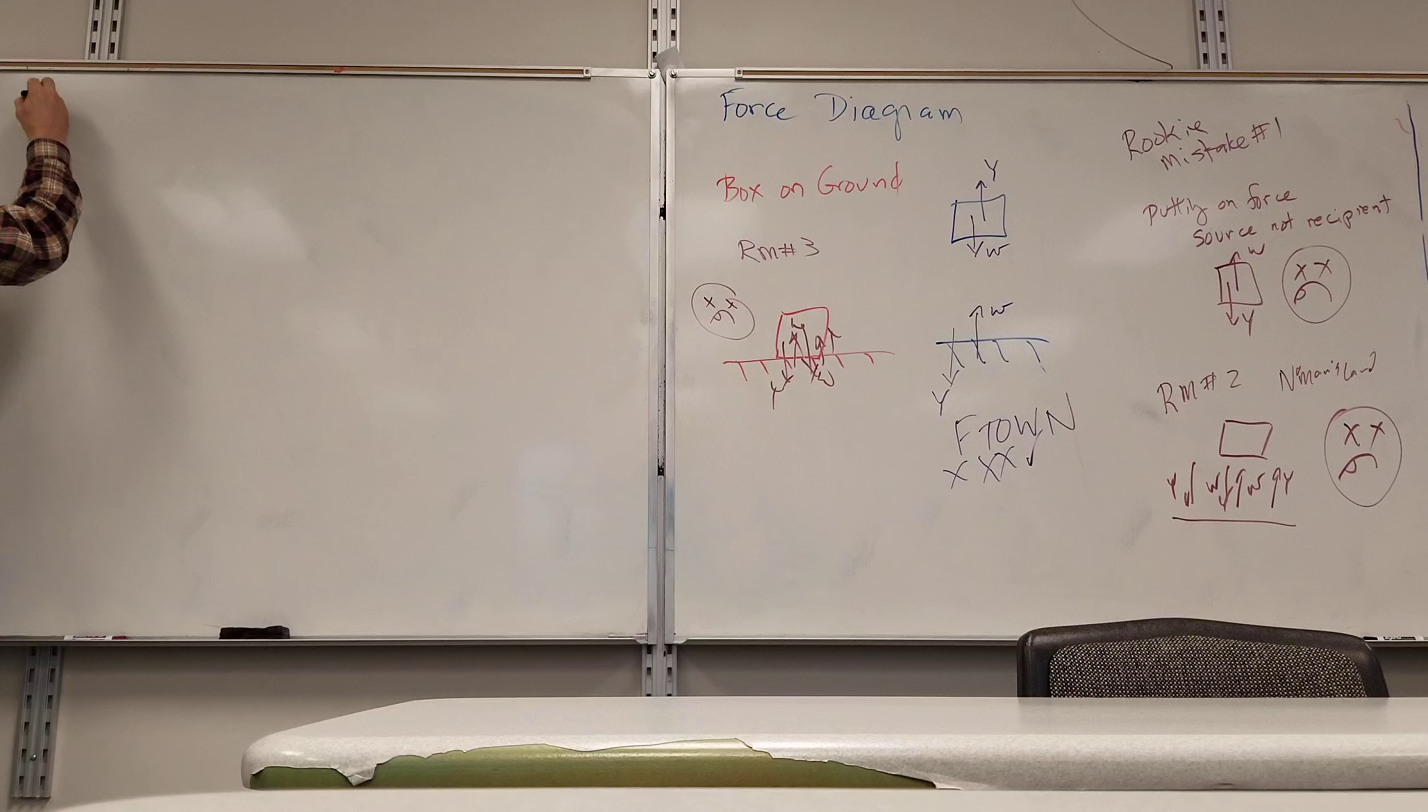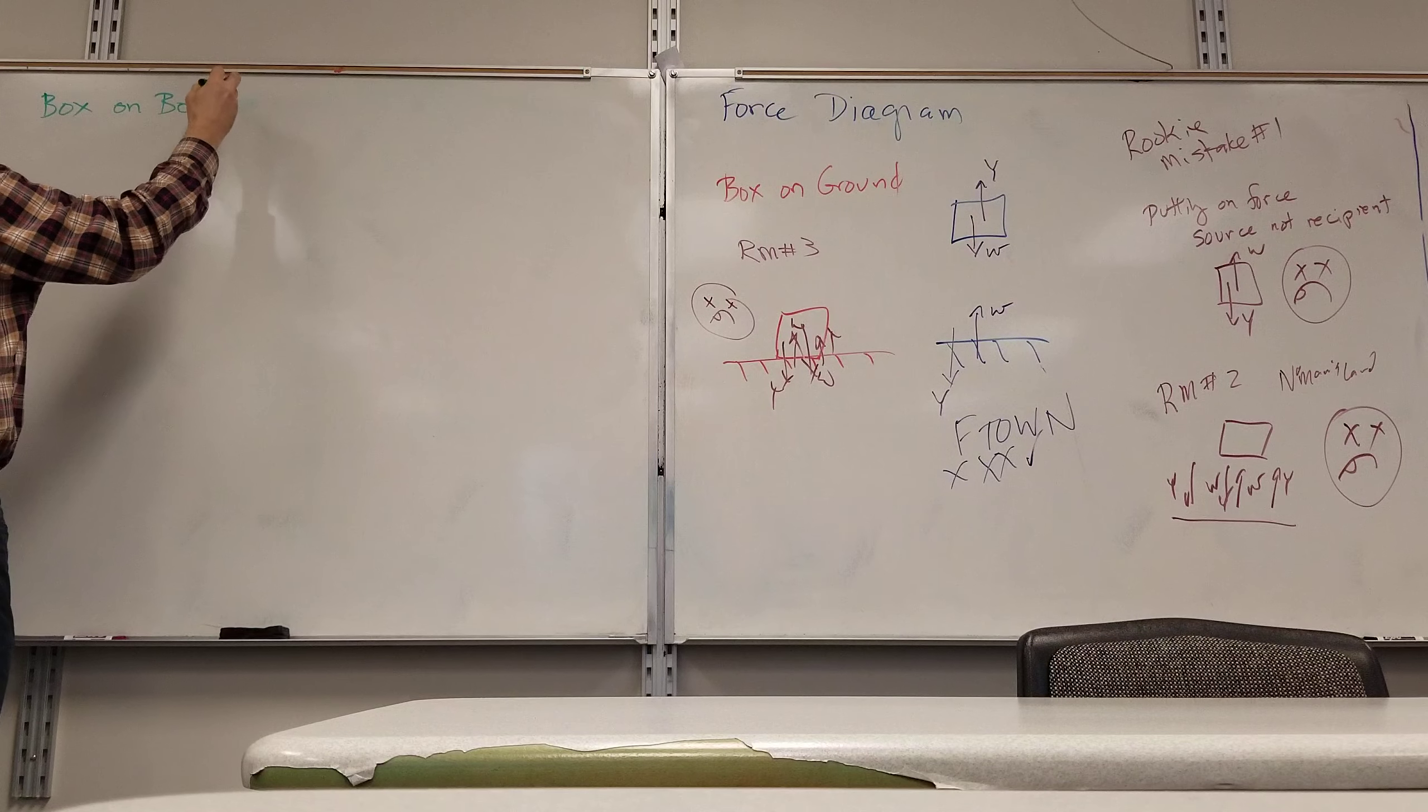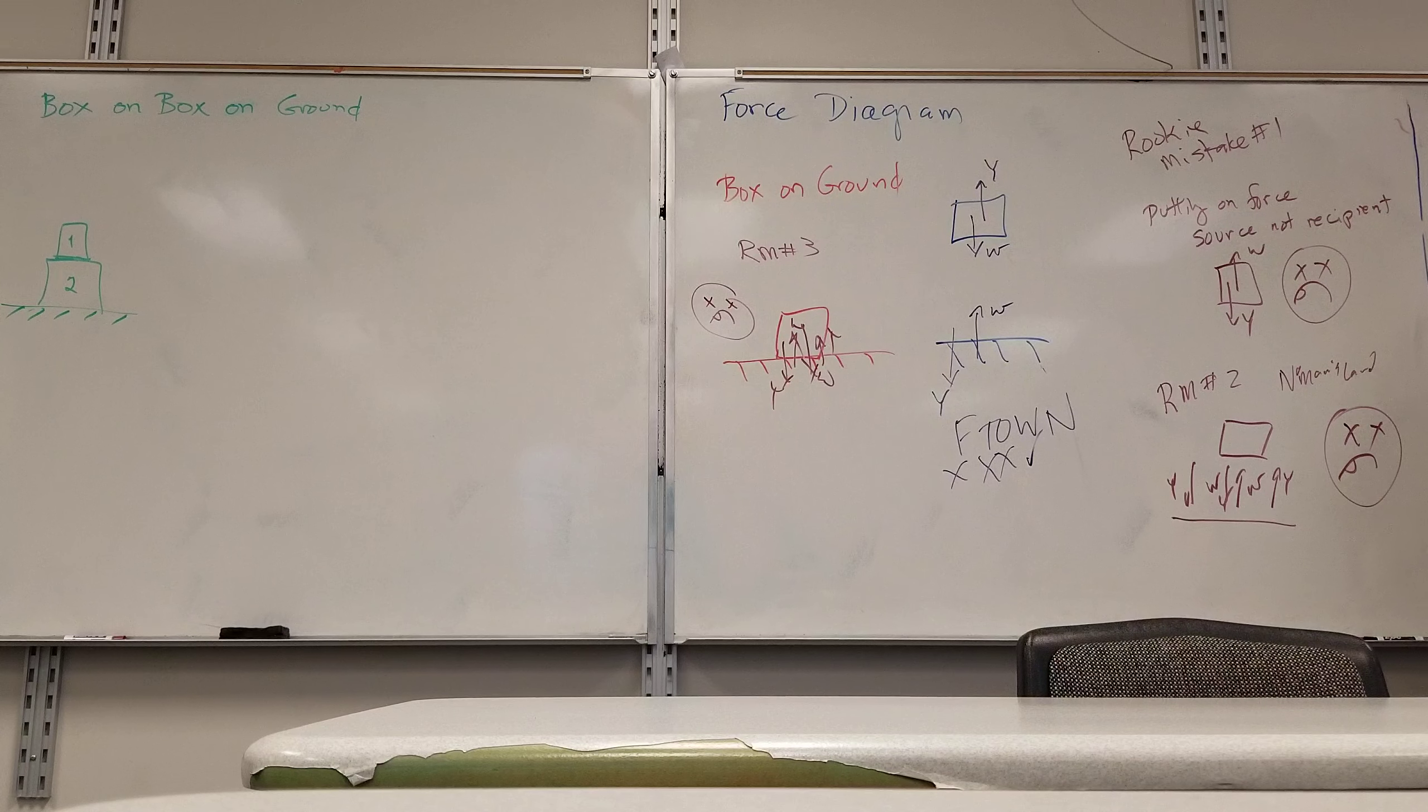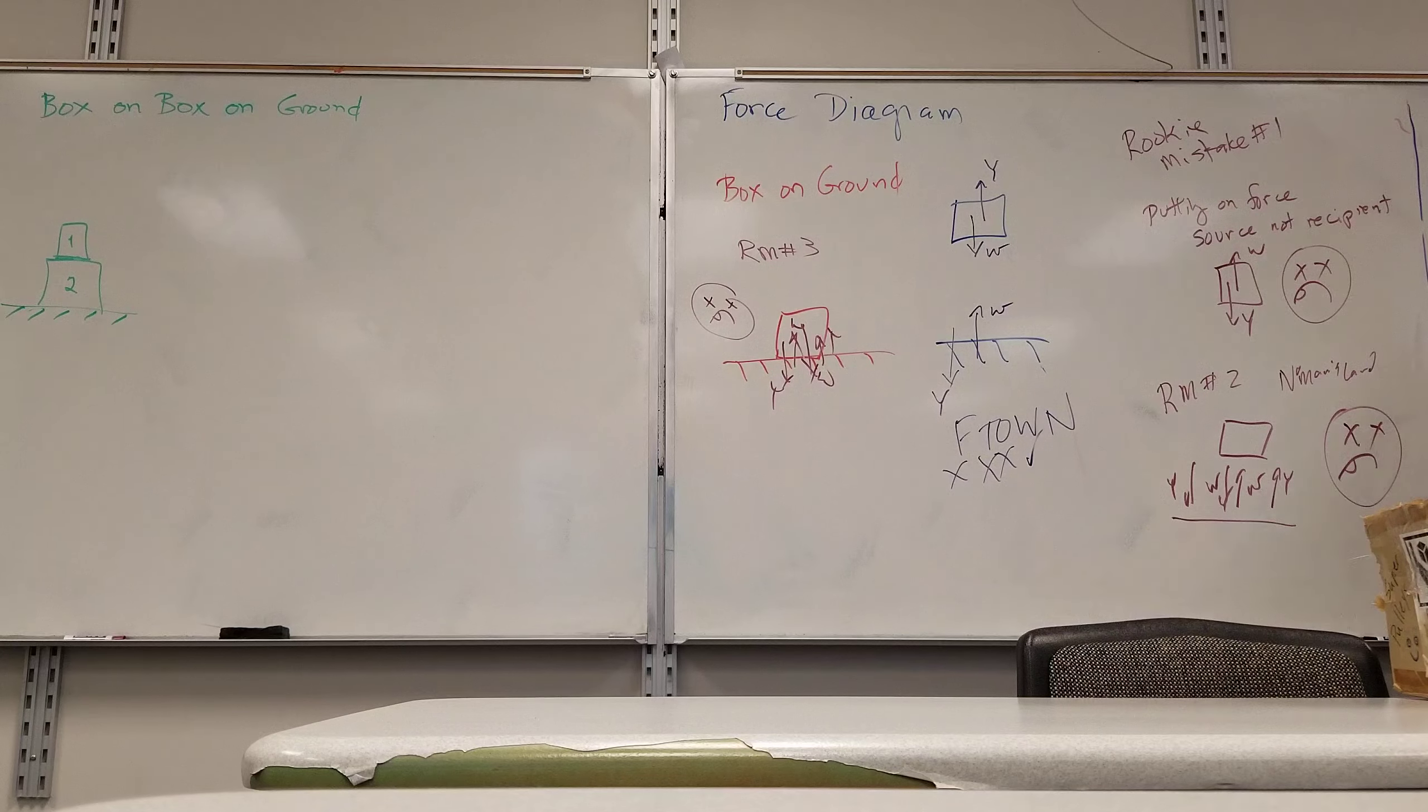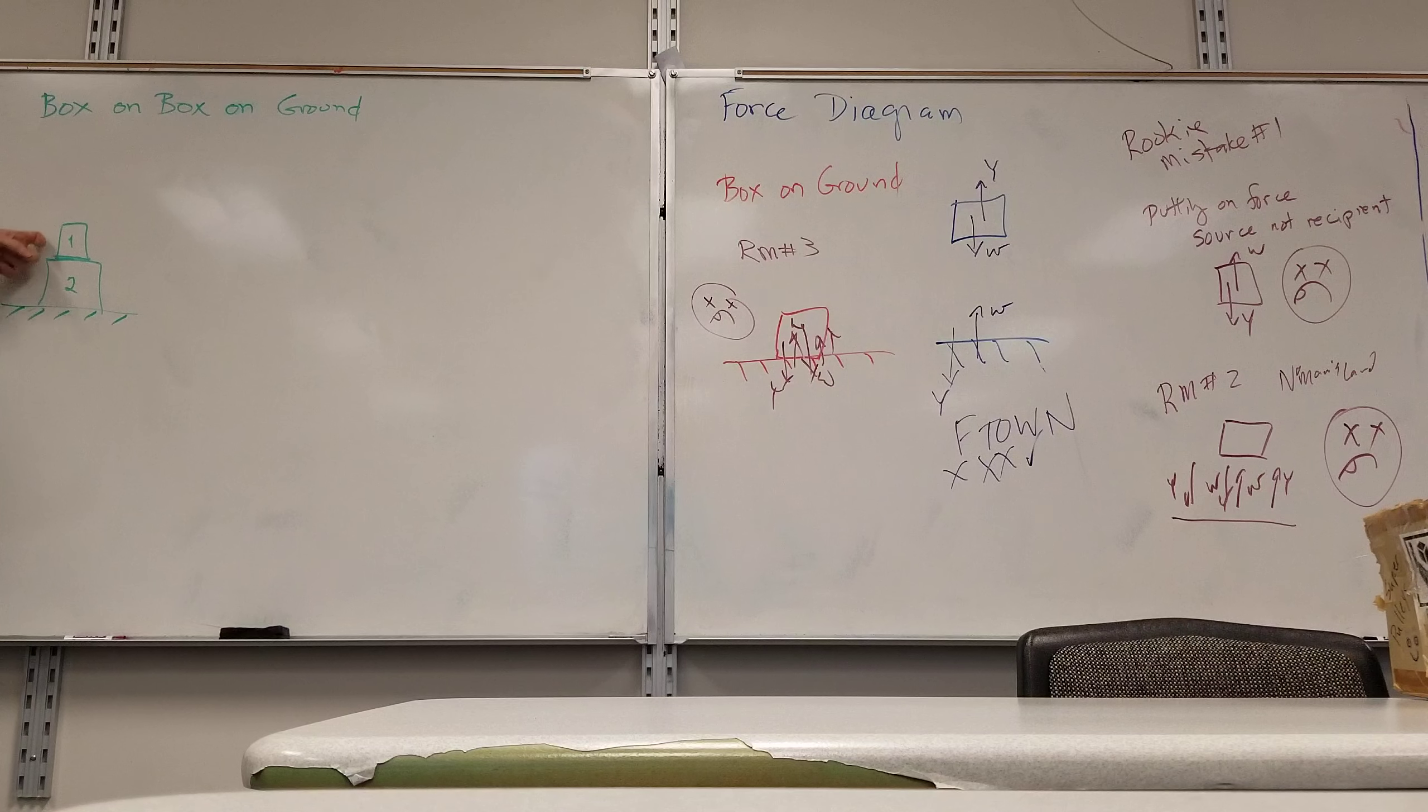Box on box on ground. And this one will actually have a direct connection to something most of you have done. I'm going to draw box one and box two. If you don't like box on box on ground, box on table on ground still works. So the first thing I do, I draw my three objects: the two boxes and the ground.